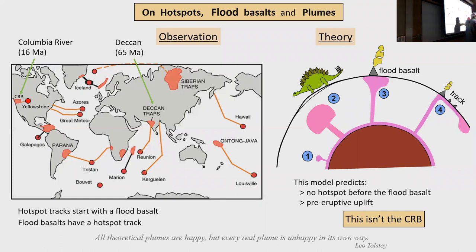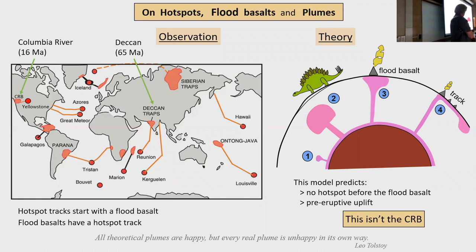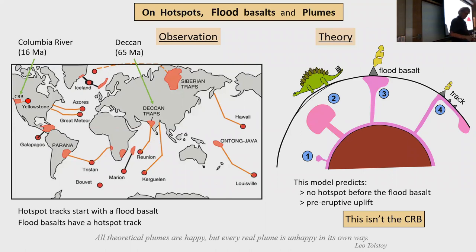The classic model predicts the flood basalt is the plume impact at the surface. But based on Ray's work and Duncan, it looks like Yellowstone was active before it was overridden by North America. So this is its re-emergence, if you will, and I proceed on that as being the truth.